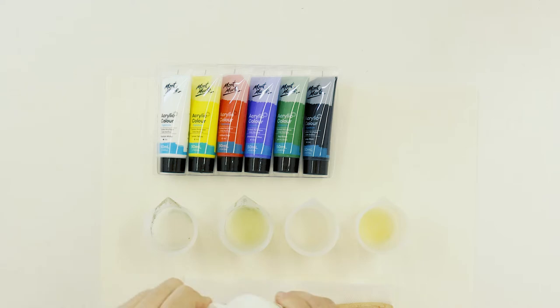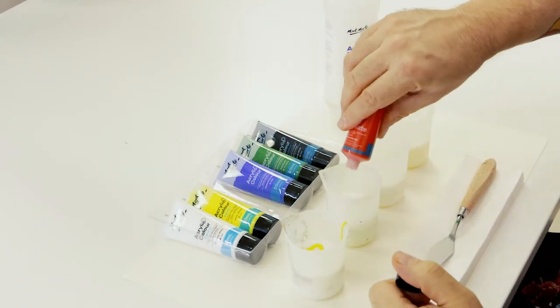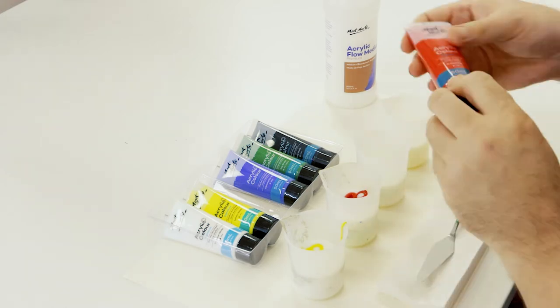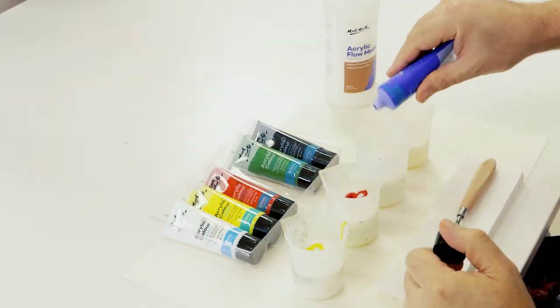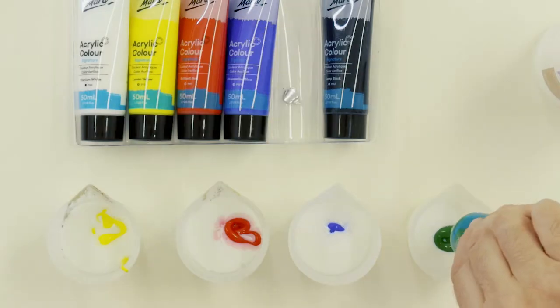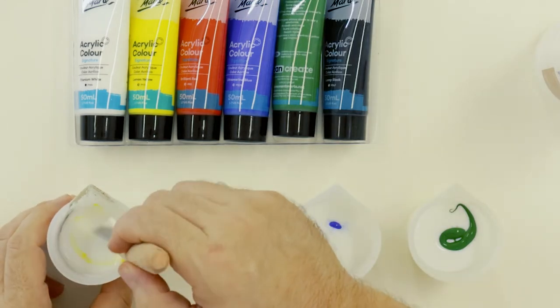First we have to mix up our paint. So we pour some medium into each cup and then squeeze in our paint and give them a good stir. Because we are pouring onto a 3D surface it's a good idea to keep the paint quite thick. A rough ratio would be one part paint to three parts medium.